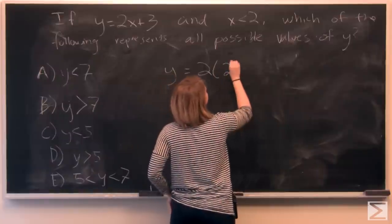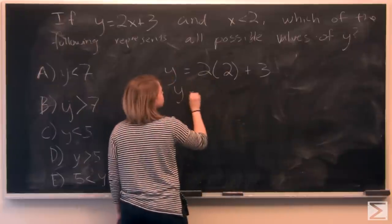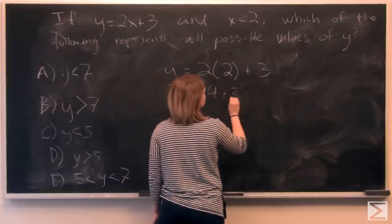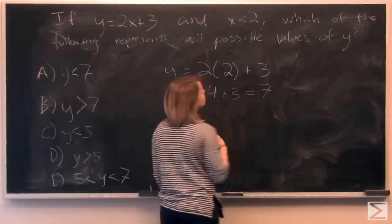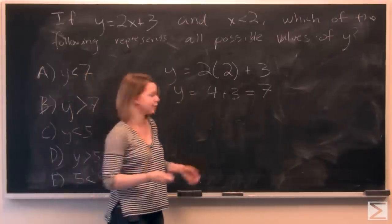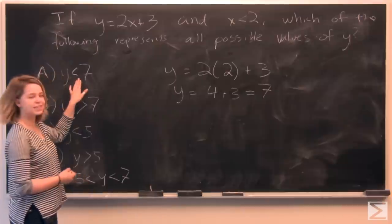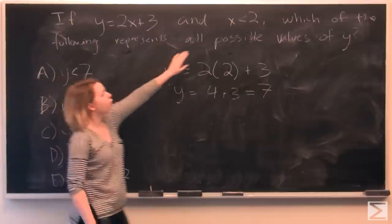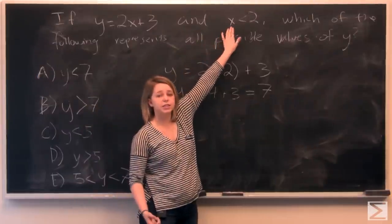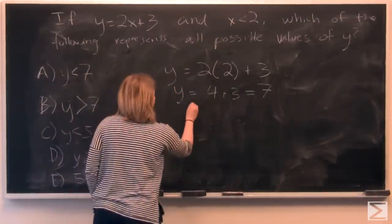So let's plug in 2 for x. So we've got y is equal to 4 plus 3. So y is equal to 7 when x is equal to 2. And so to find out whether y is less than 7 or greater than 7 for all possible values where x is less than 2, I like to create a graph, to sketch a quick graph.